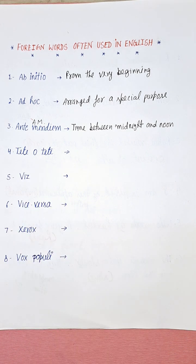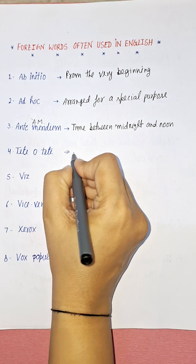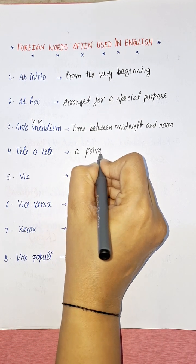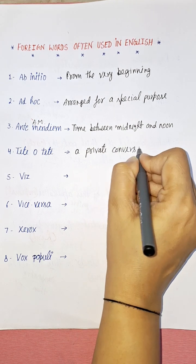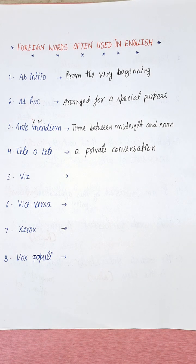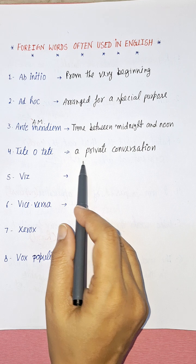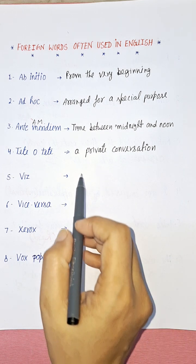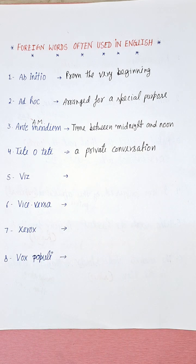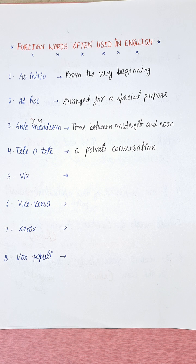Now let's take the fourth word: tête-à-tête. You can pronounce it 'tete-a-tete.' It means a private conversation. For example: 'This was the place for our tête-à-tête' — meaning we need a place where we can talk privately. So instead of saying 'a private conversation,' you can use tête-à-tête.